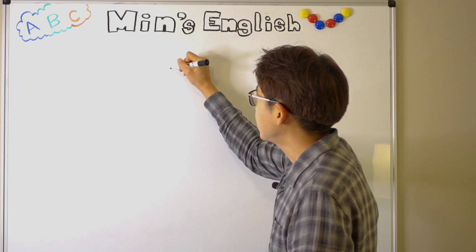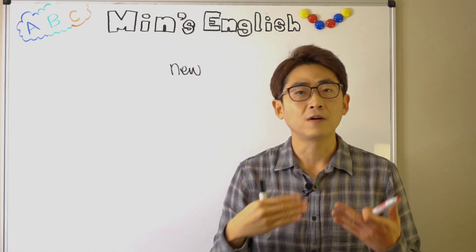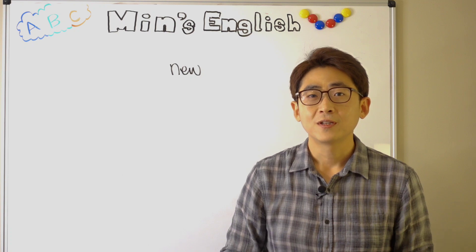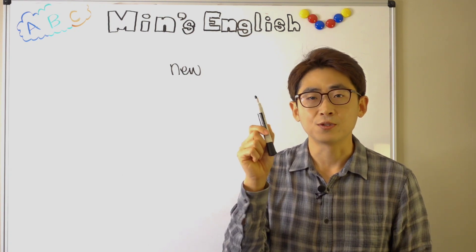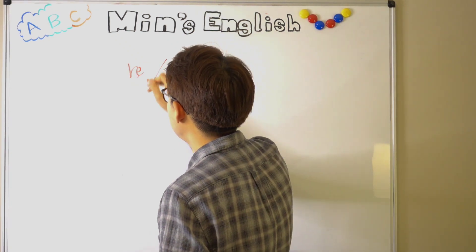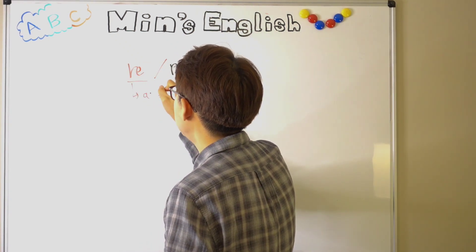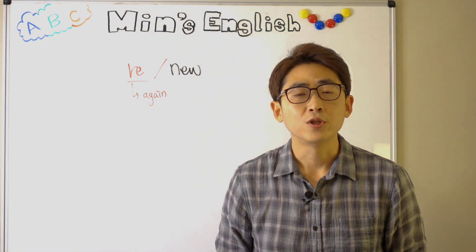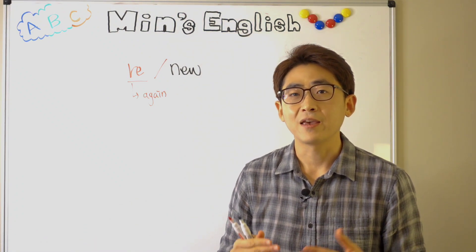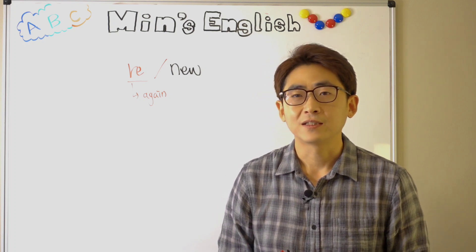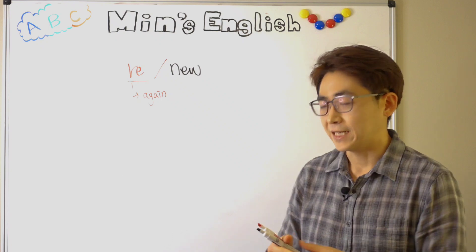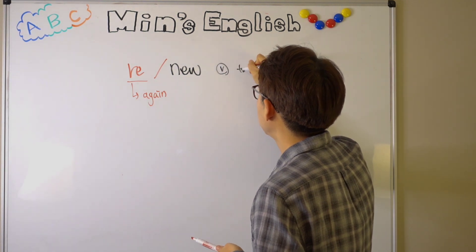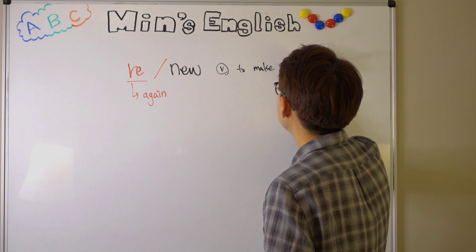Our first vocabulary is 'new.' New is an adjective that we are all familiar with. It describes the quality of an object — so I bought something new, this camera is new, this pen is new. And by adding 're' in front, this has the meaning 'again,' so 'renew' means to make something new again. For example, my membership of a fitness club expired and I want to make it new again — then I use the word 'renew.' Renew is used as a verb to make something new again.